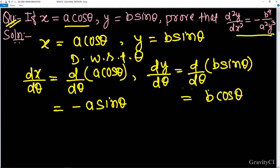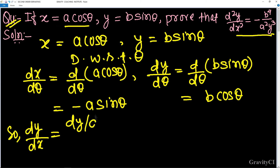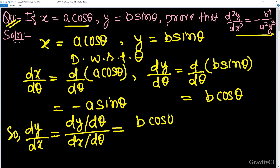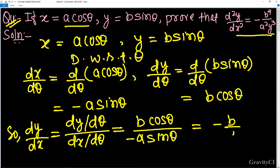So dy/dx equals dy/dθ divided by dx/dθ, which equals b·cos θ upon minus a·sin θ, so equal to minus b upon a times cos θ over sin θ, which is minus b/a · cot θ.